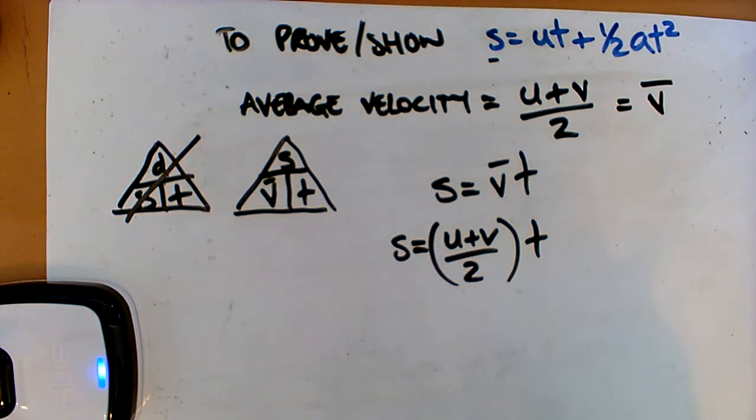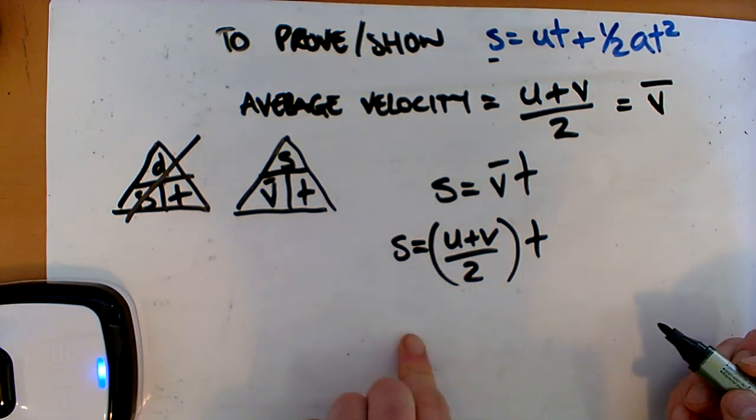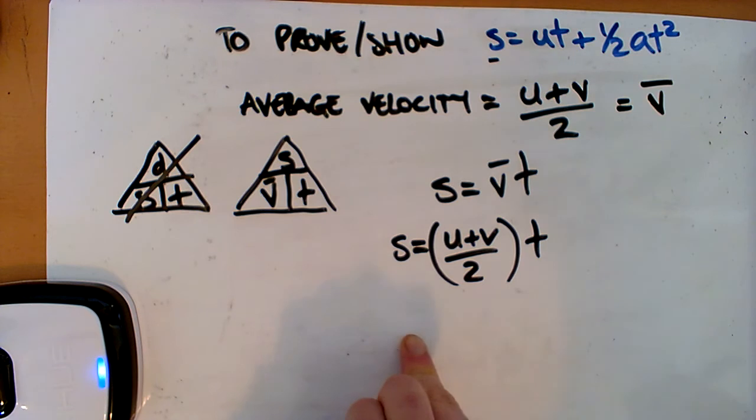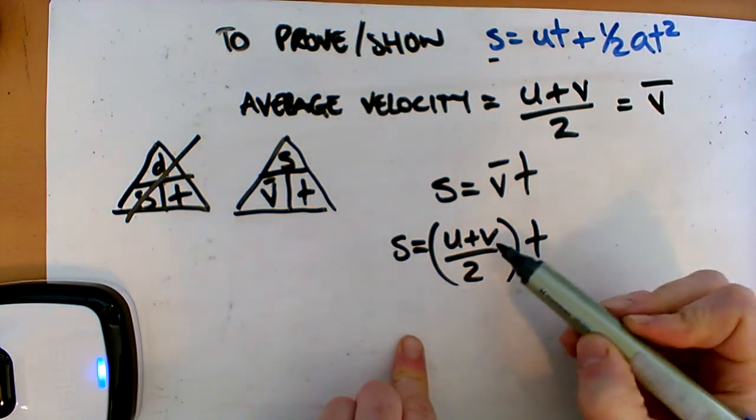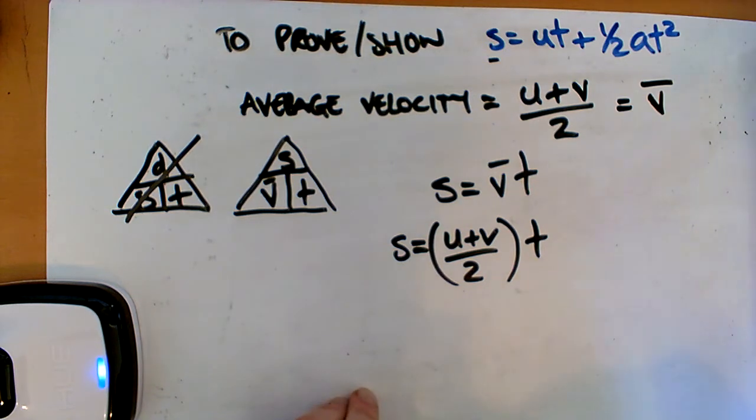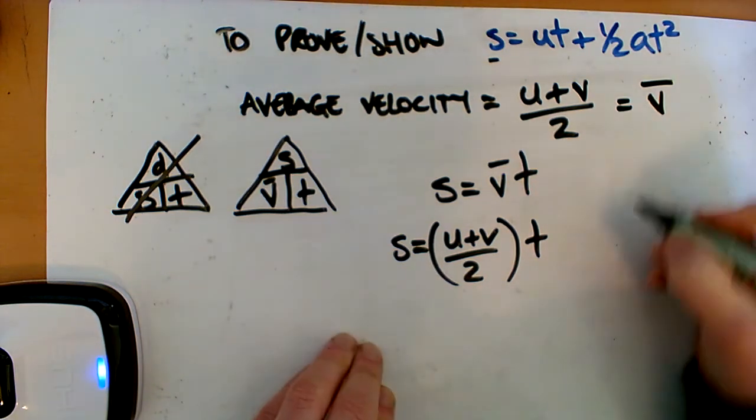So remember from our first derivation on the other one of our UVAS, we have an equation for V. Because you can notice there's no V up here, is there? We don't have any V. And we've got a V down here. So we definitely want to get rid of that. And if we remember,